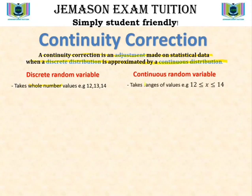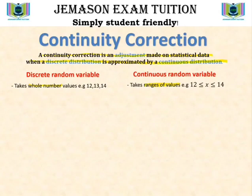On the other side, continuous random variables can only take ranges of values. These values in ranges are obtained by measurements most of the time. For instance, you could be taking the weights of children and rounding them to the nearest whole number. In that case, a range of 12 to 14 would include all real numbers — you could have 12.1, 12.01, 12.5, 13.5, 13.001, and so on.